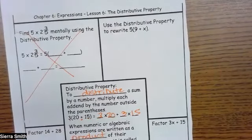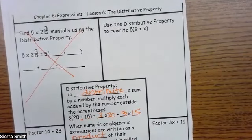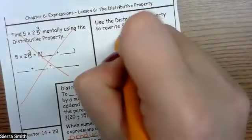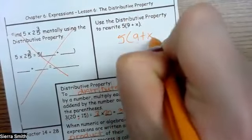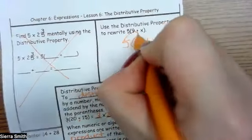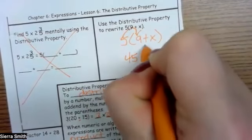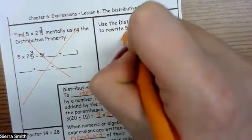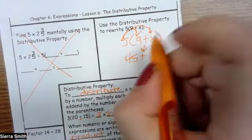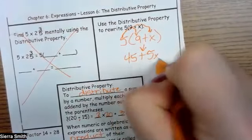We're going to skip this first part and move to the second one. Use the distributive property to rewrite 5 times the sum of 9 and x. So I've got to do 5 times 9, which gives us 45. Bring down your sign, and then you've also got to distribute 5 to x, which is 5 times x, which gives us 5x.